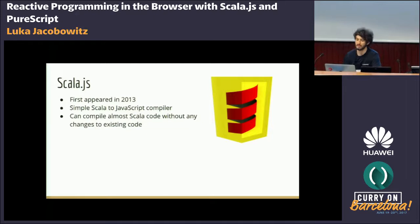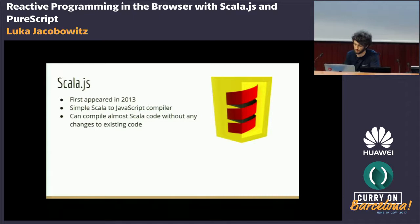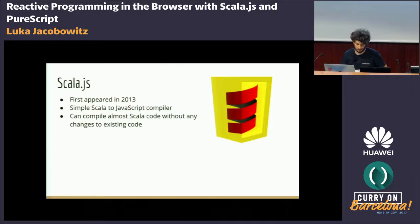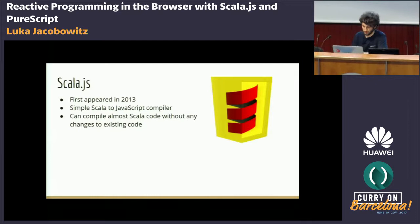Scala.js first appeared in 2013. It's being developed at EPFL and it's a very simple Scala to JavaScript compiler — it takes Scala source code and compiles it to JavaScript. It does not take .class files, so JVM bytecode does not work. It can compile almost all Scala code without changes, with a few exceptions: multi-threaded code can't work in JavaScript because JavaScript is inherently single-threaded.